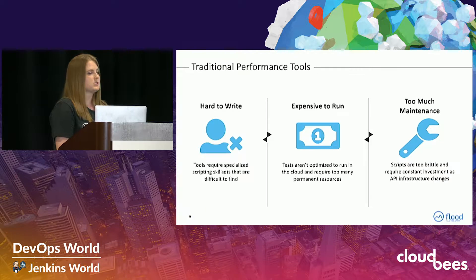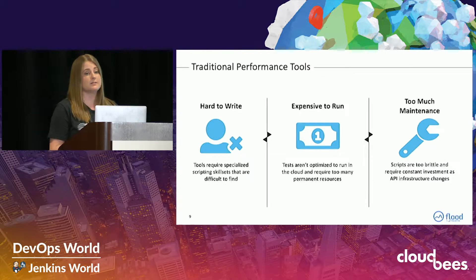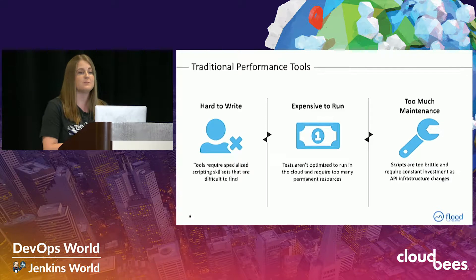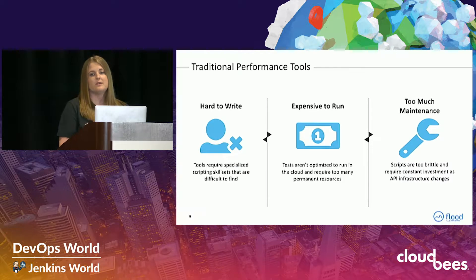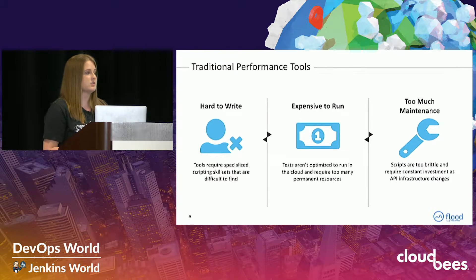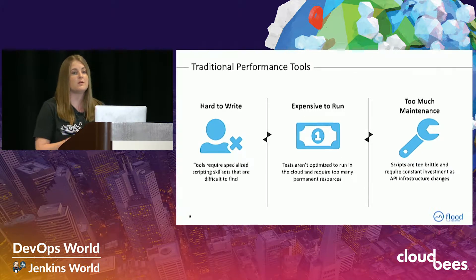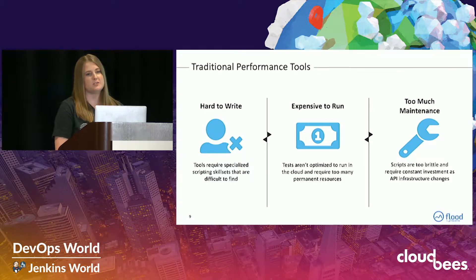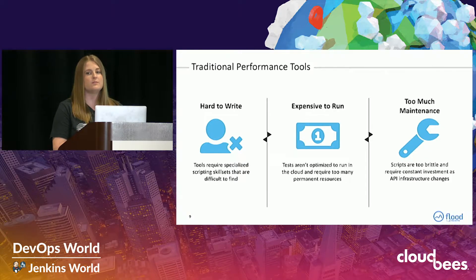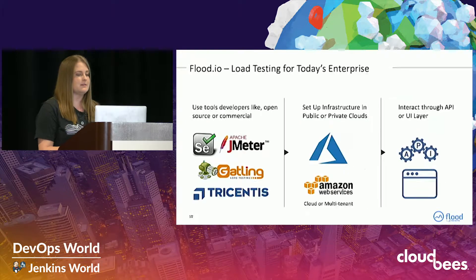In traditional performance testing tools, test cases can be very difficult to write — it takes a very specific skill set to create them, which is a barrier to entry for performance testers. On top of that, there's the infrastructure cost; running a one-million-user test on-premise would be extremely expensive. And as your infrastructure changes, test cases can become more fragile and require too much maintenance. That's exactly what we've addressed with Flood IO.